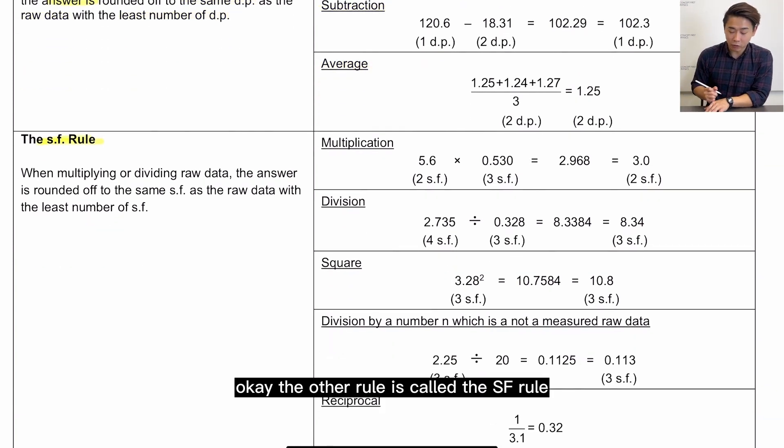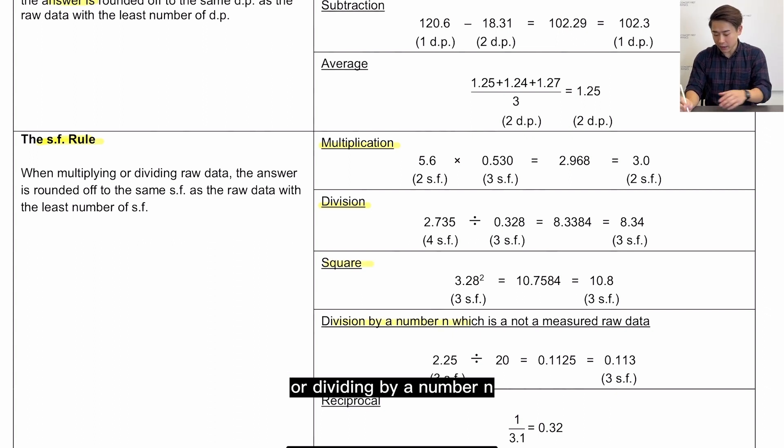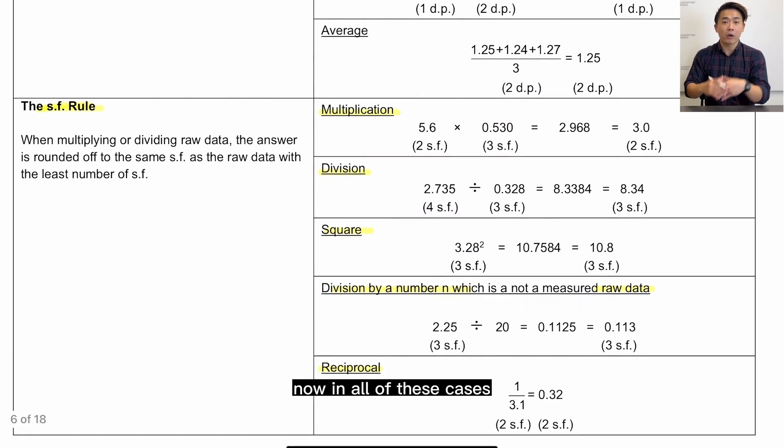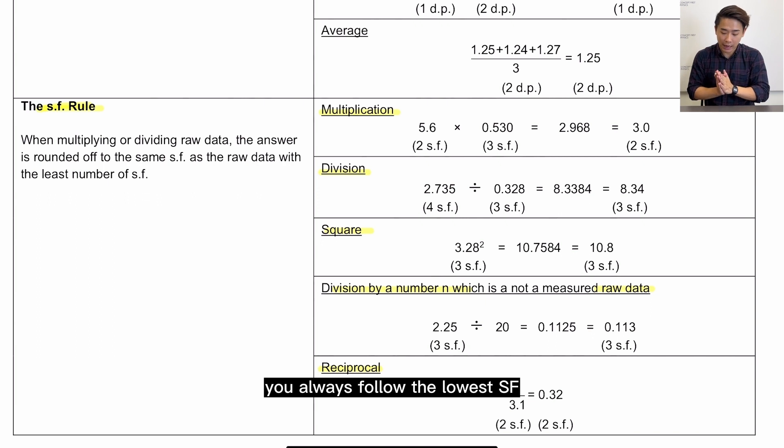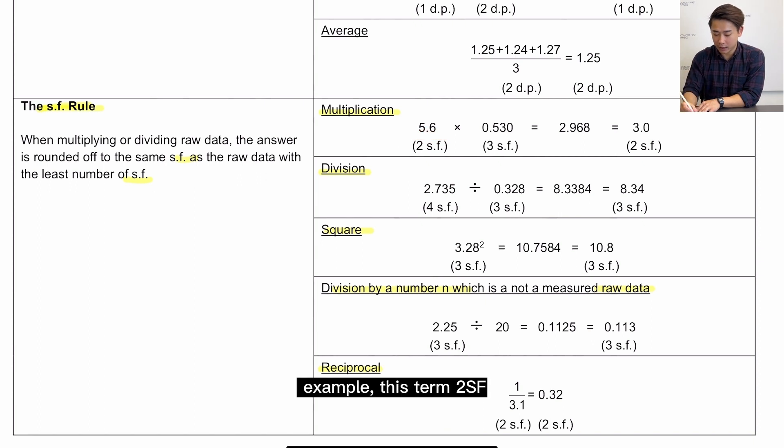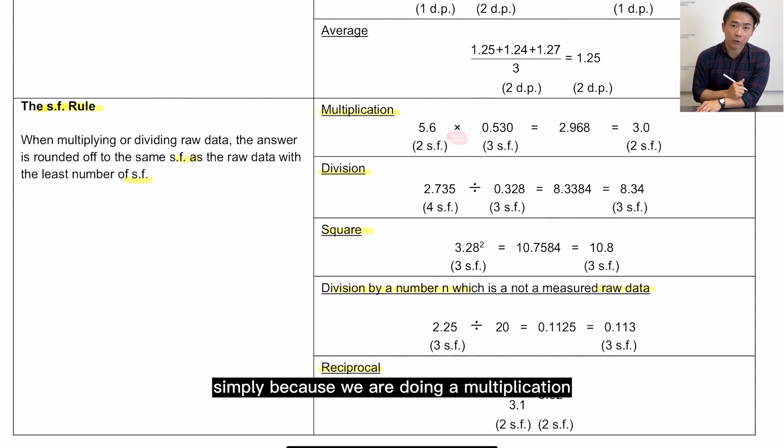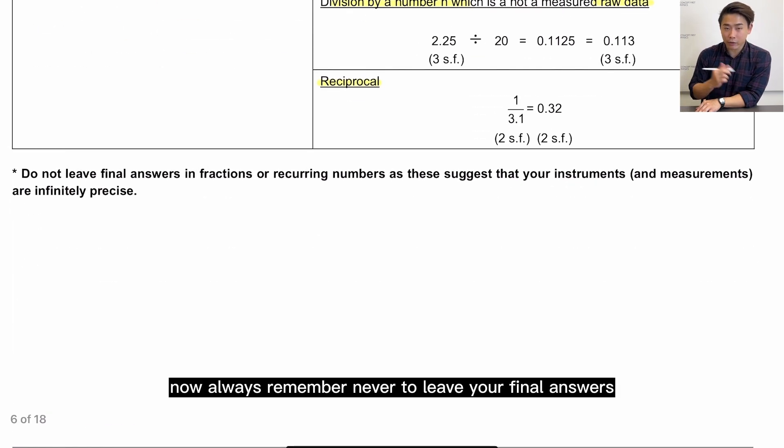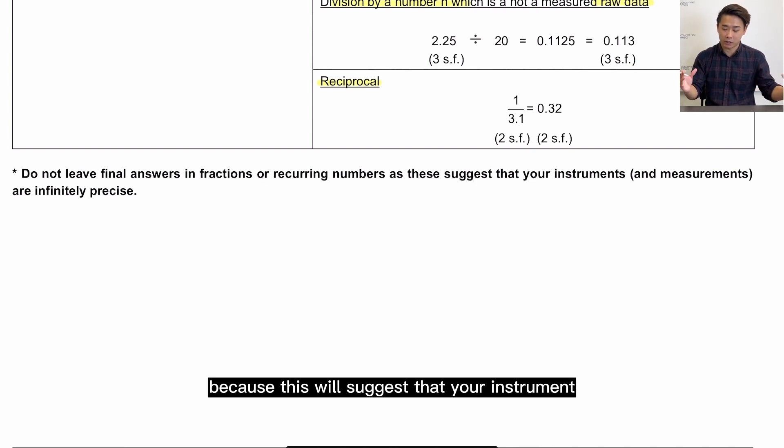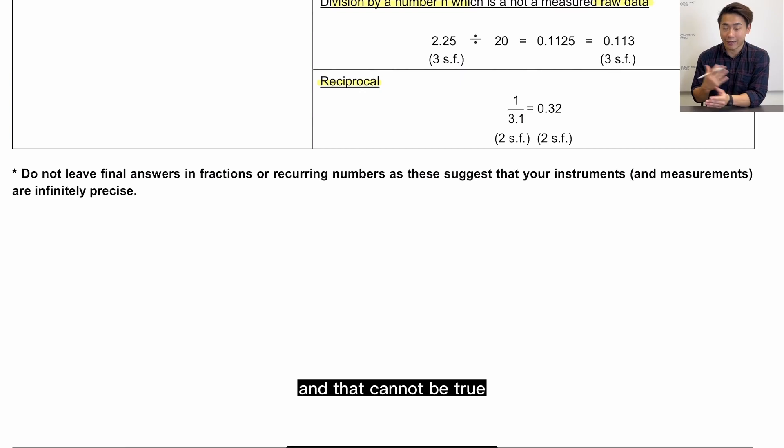Okay, the other rule is called the SF rule. You use it when you're multiplying, dividing, squaring, or dividing by a number n which is a constant and not a measured value, or when you're using a reciprocal. Now in all of these cases, you always follow the lowest SF. What it means is that you follow the significant figure of the term that has the lowest SF. Example, this term 2SF, this term 3SF, so the final answer will be 2SF simply because we are doing a multiplication. Now always remember, never to leave your final answers in fractions or recurring numbers because this will suggest that your instrument was infinitely precise, and that cannot be true.